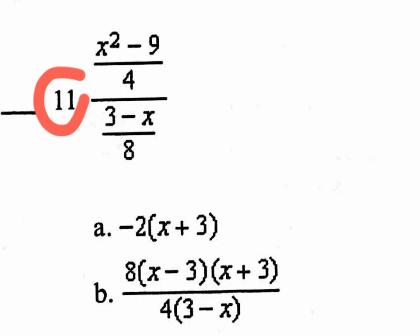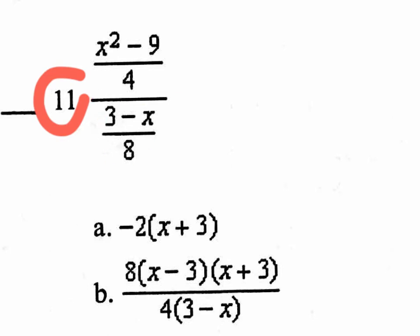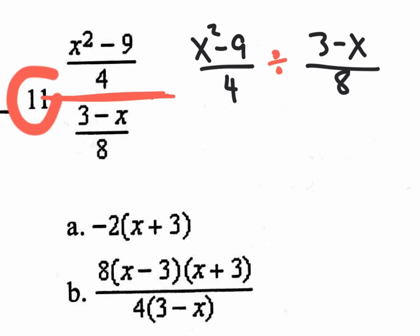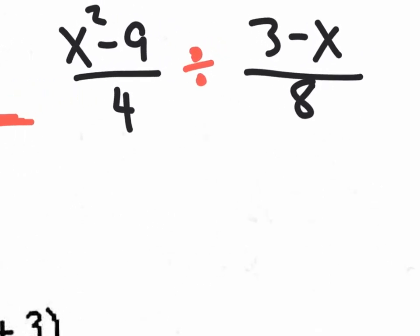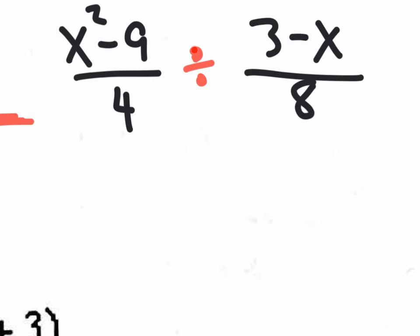Number 11 looks confusing — it's called a complex rational. It looks complicated but it's easier if, instead of writing it vertically, you write it horizontally as a fraction divided by a fraction. There it is written horizontally. Now rewrite the division as multiplication and flip the second fraction.